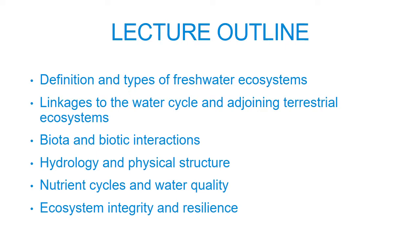This lecture and the activities accompanying it are designed to introduce you to freshwater ecosystems. I'll define what freshwater ecosystems are and show you some of the main types. We'll look at how freshwater ecosystems are interconnected in the larger water cycle and with adjoining terrestrial or land ecosystems. We'll review the wide variety of biota inhabiting freshwater ecosystems and their hydrology, physical structure, and water quality. These elements determine the integrity and resilience of freshwater ecosystems, which is their ability to withstand and recover from natural and human interferences.